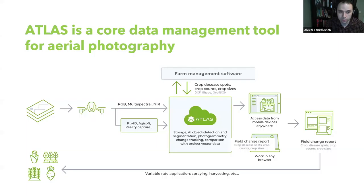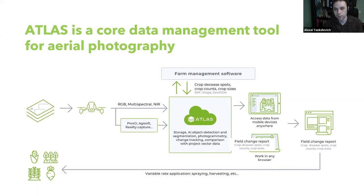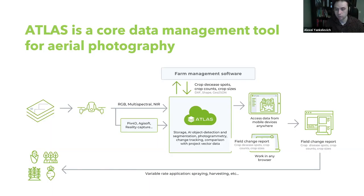The overall process looks like the following: we acquire data either from satellite or from the drone. If you have just images like JPEG files, you can upload them directly to Atlas, or you can use your favorite photogrammetry processing tool to generate orthomosaics and then upload those orthomosaics to Atlas. Then in Atlas you can make territory segmentation, train your detectors, and analyze the orthomosaics. Vector layers can be accessed through our web interface, which works on normal computers and tablet PCs — in the office, in the field — or you can export results as vector data to farm management software.